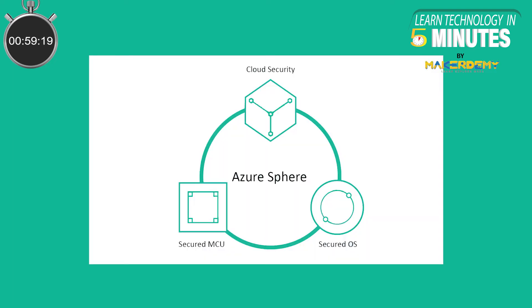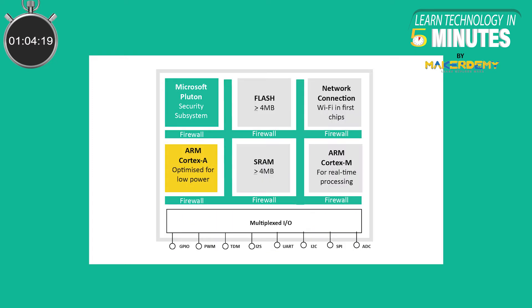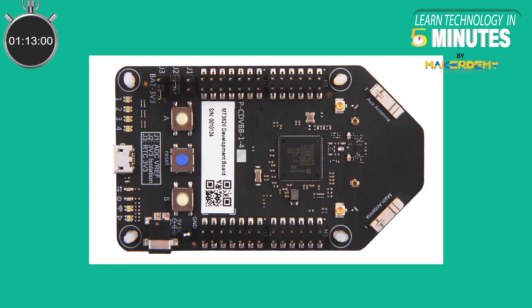Now we will discuss these primary components one by one for more understanding. The architecture of an Azure Sphere MCU includes multiple cores, including secure processors like the ARM Cortex-A family. Azure Sphere hardware comes with Wi-Fi, Ethernet, Bluetooth, and cellular connectivity.